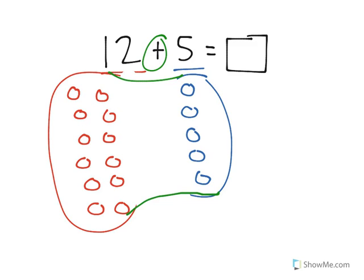And we know that there were 12 in this group, so the last number would be 12. I can just count on 13, 14, 15, 16, 17.